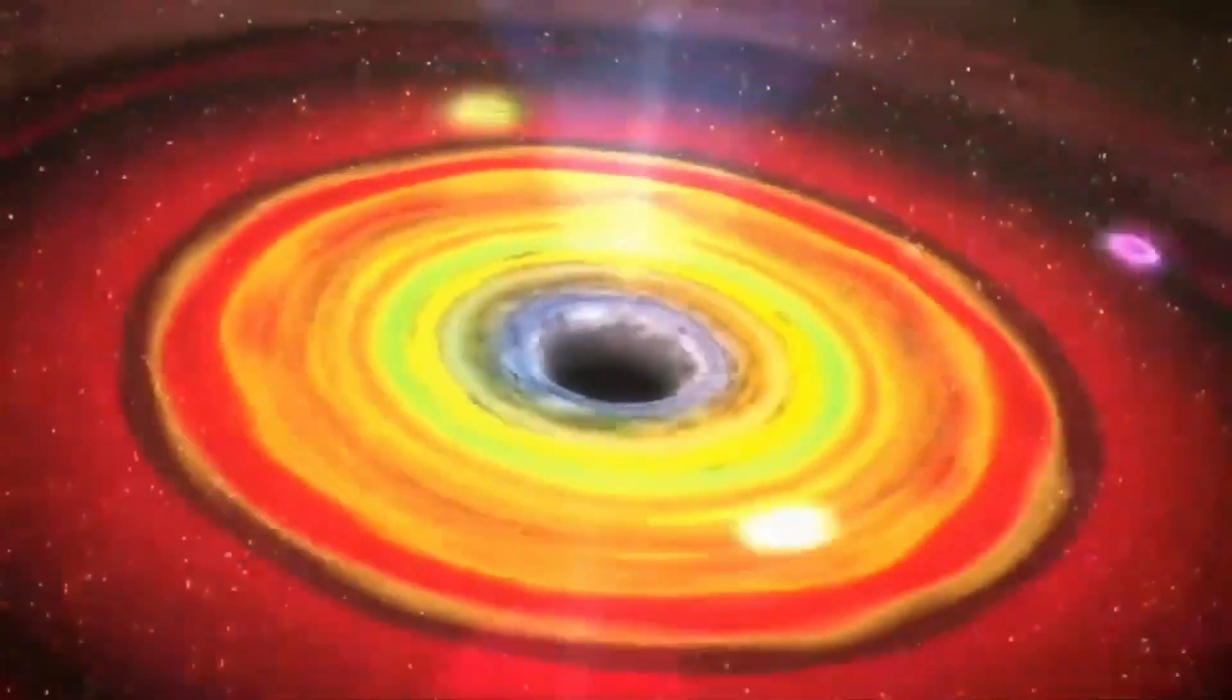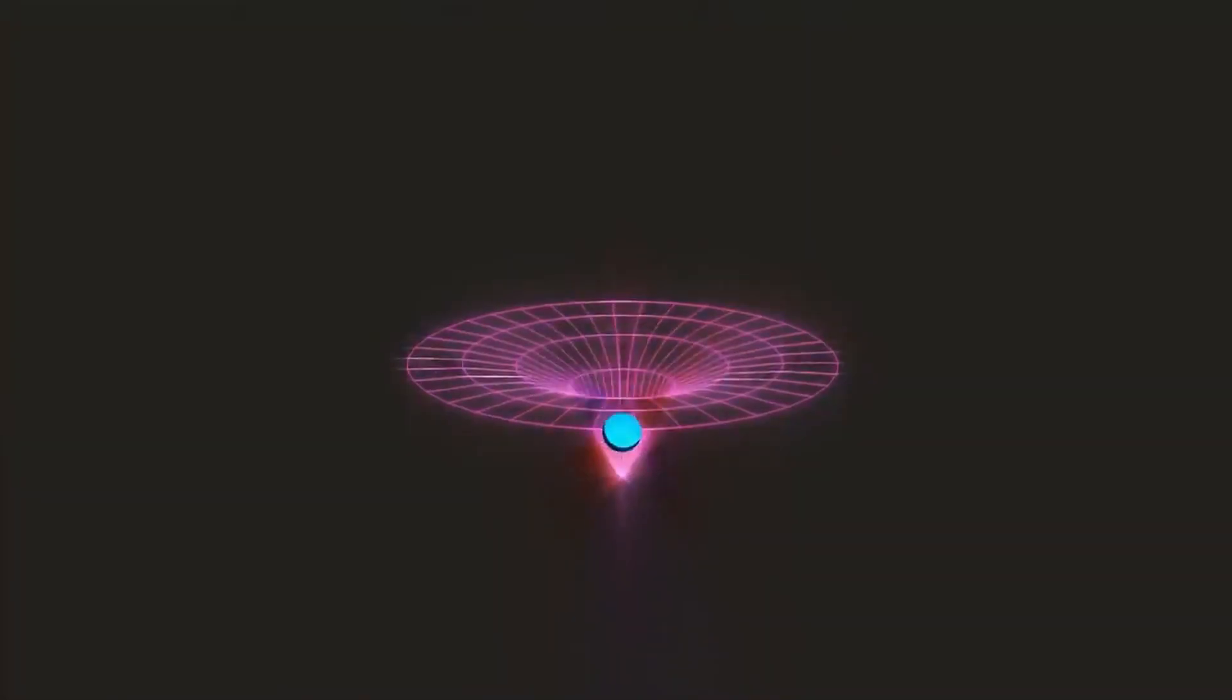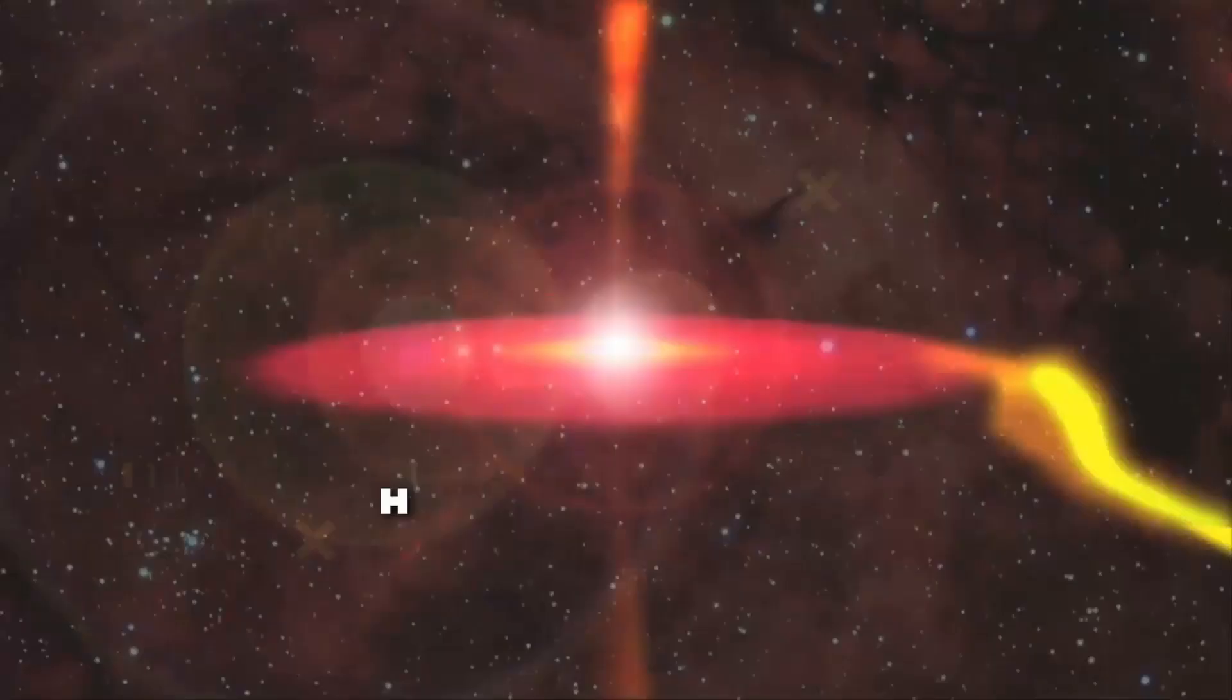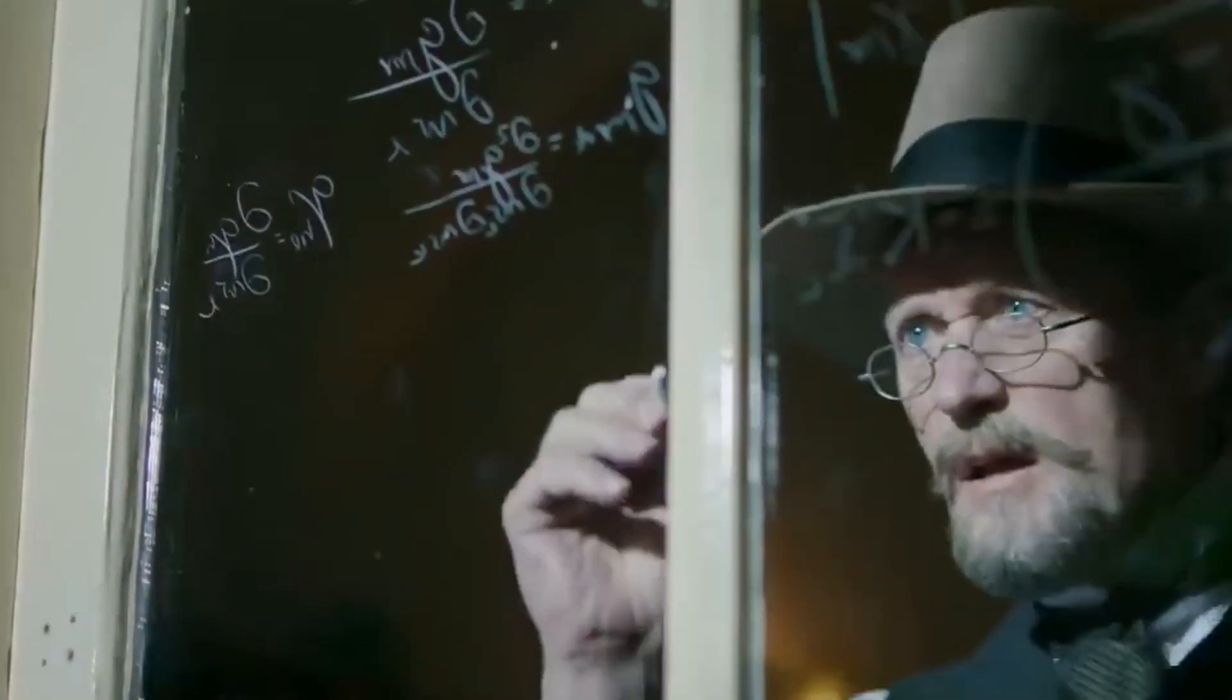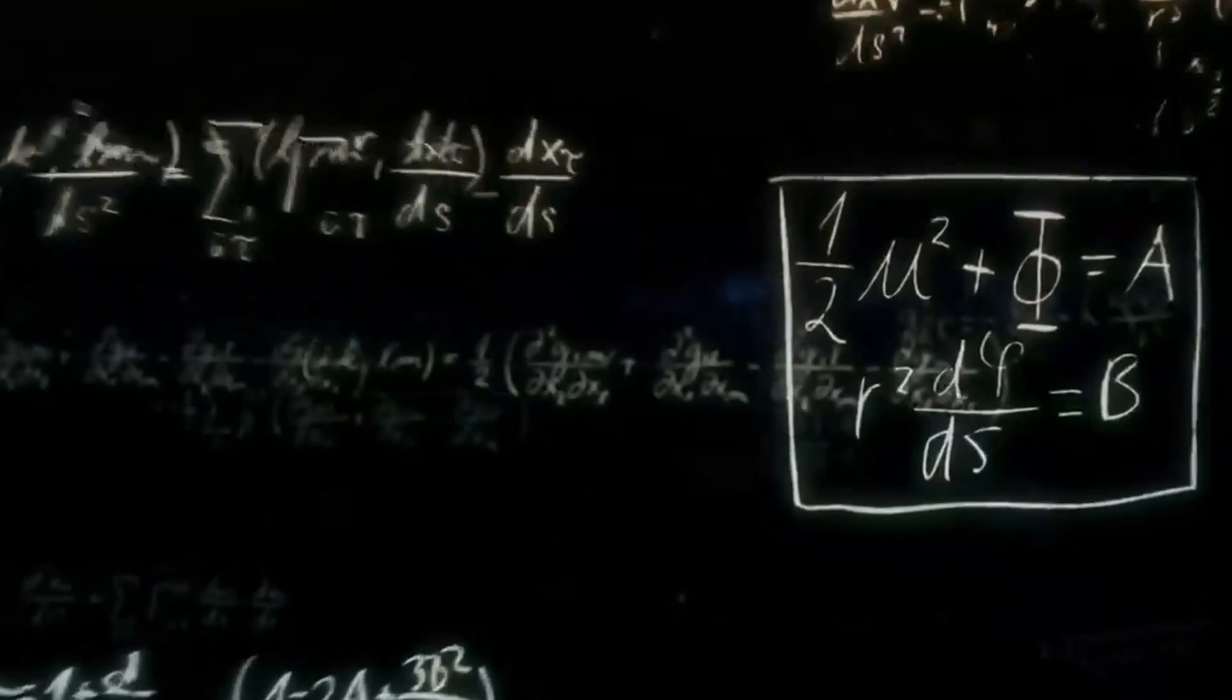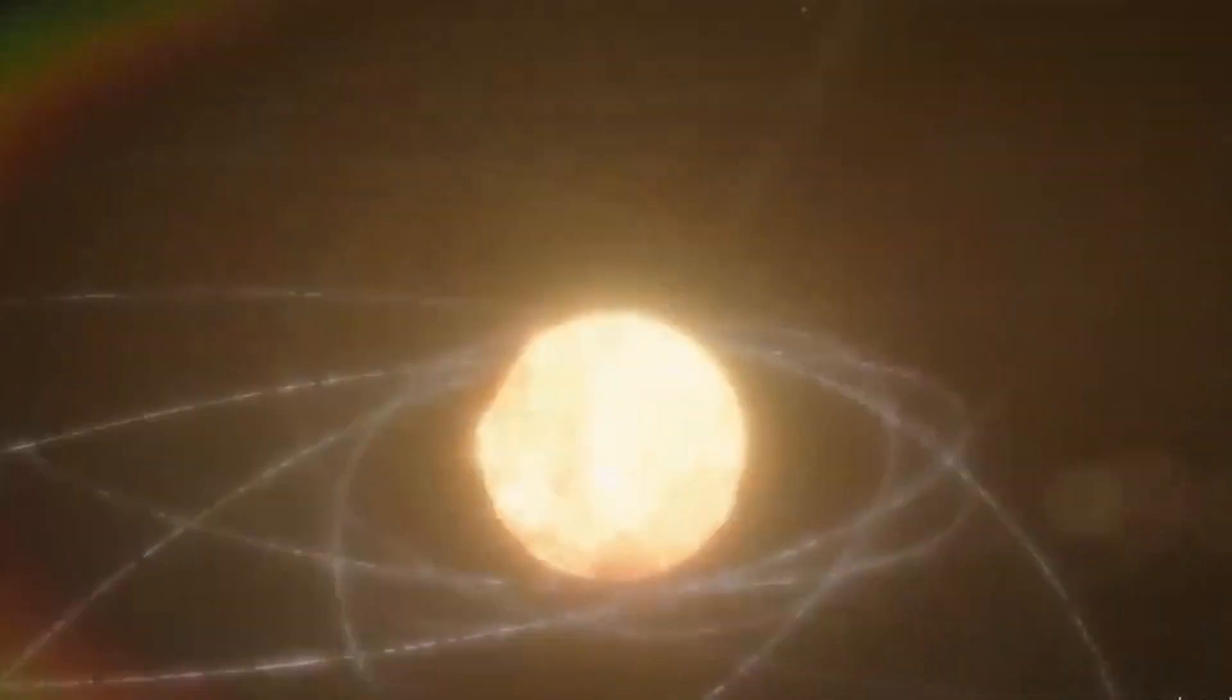One of the defining features of a black hole is its event horizon, a boundary beyond which nothing can escape. What exactly is the event horizon? How does it work? And what happens when something crosses it? These questions have intrigued scientists and the public alike for decades, leading to a wealth of research and speculation about the properties and behaviors of black holes.